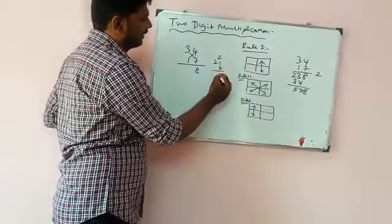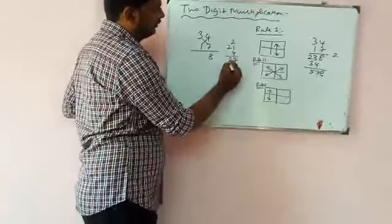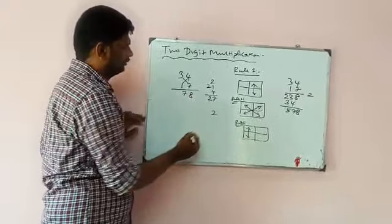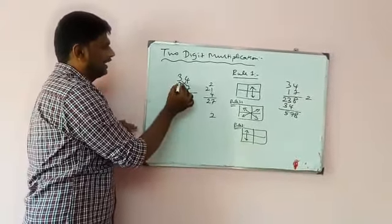Seven, two, two, so the number is seven, remaining two. Next, I am going to multiply the tens place.